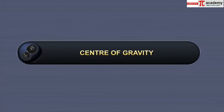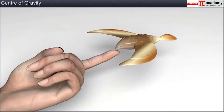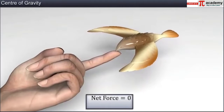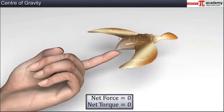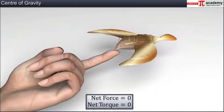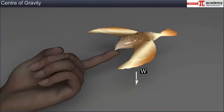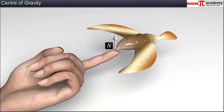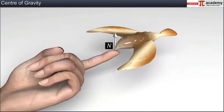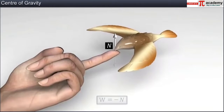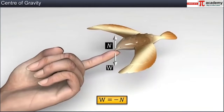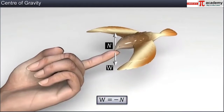In this module you will learn about center of gravity. The balancing bird shown here is in static equilibrium, which means the net force and net torque acting on it must be zero. We know that there are two forces acting on the bird: one is the gravitational attractive force — the weight of the body in the downward direction — and the balancing force N in the upward direction.